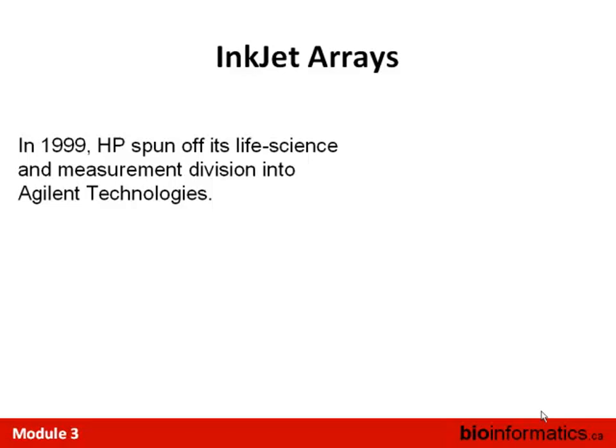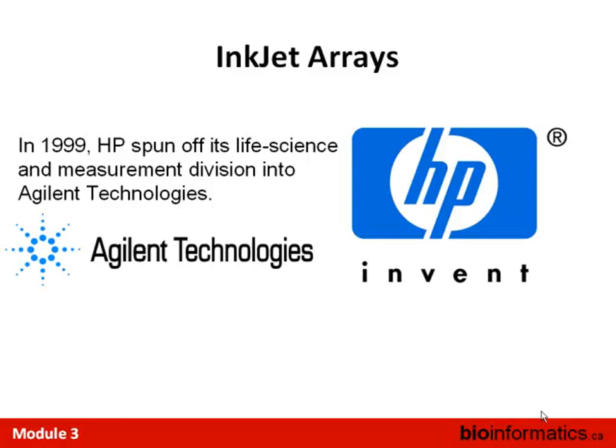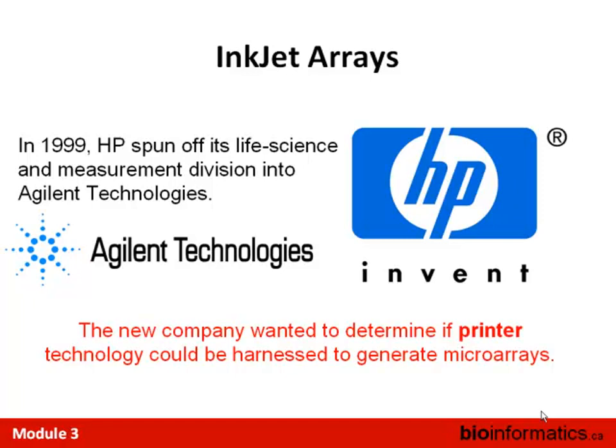About 12 years ago, HP spun off all its life science and measurement work into a company called Agilent, which has been very successful. Agilent decided to think about what HP was good at — putting really tiny dots of ink onto paper — and whether that could be used to put really tiny dots of DNA onto a glass slide. Could you use the same technology used for printers to generate a microarray? And indeed, you could.